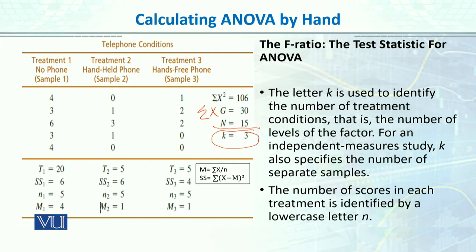Summation X squared means you square each X and then sum them. T1 is the total of group 1 — if you add the 5 values it equals 20. T2 means if you add the 5 values, it equals 5.